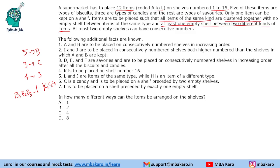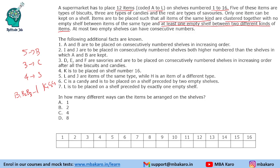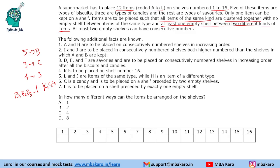We are given some information and based on this we need to answer the questions. We will make a shelf diagram with numbering from 1 to 16. Looking at the information directly given: shelf number 16 is given to us — K is to be placed on shelf number 16. So this is certain.